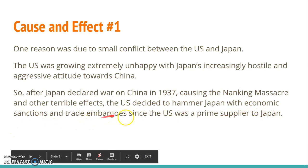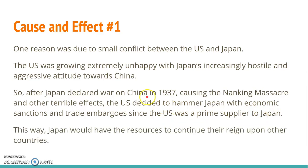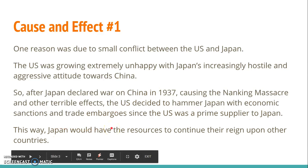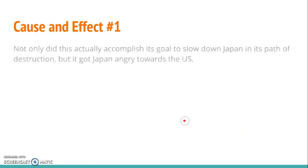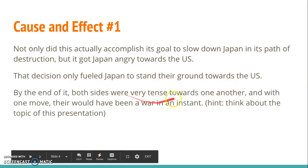The U.S. decided to hit Japan with economic sanctions and trade embargoes, which basically means a withdrawal of resources from one country to the other. Since the U.S. was the prime supplier to Japan, the U.S. pulled back any resources it was sending to Japan. This basically stopped Japan from continuing its expansion. The effect was that it did slow down Japan, but it actually got them angry.